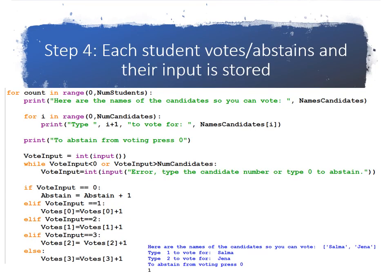So step four is where each student either votes or abstains, and we store their input. So it's a for loop, and the range of the for loop is from zero to the number of students in the class, say for example 30. We're going to show them a message: here are the names of the candidates. We need to use a for loop to show them the names of the candidates. So for i in range, here are the names of the candidates, and you can type one to vote for the first candidate, two to vote for the second candidate, or to abstain from voting, you can type zero.